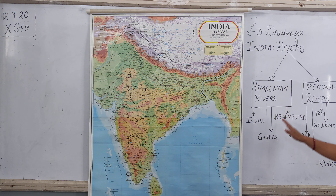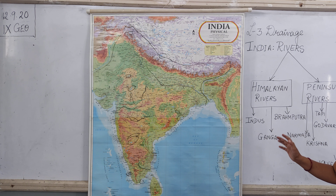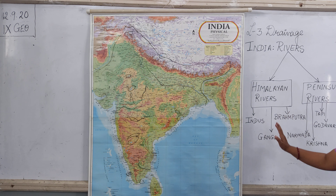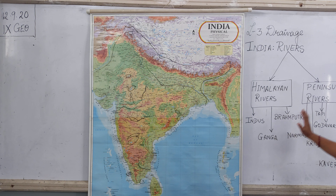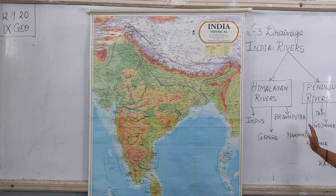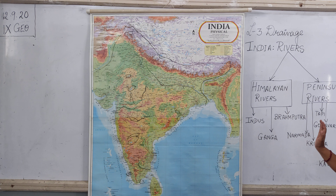As we know, Himalayan rivers are perennial throughout the year, that is they carry water throughout the year. And the peninsular rivers, they do carry water all through the year but the amount of water reduces during the summer season.